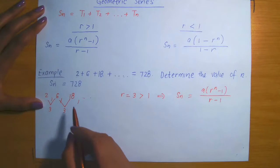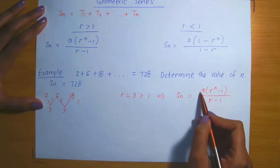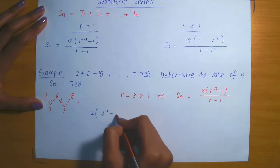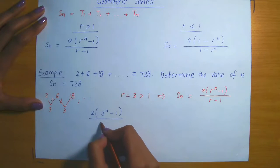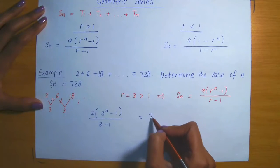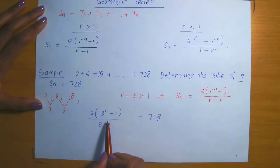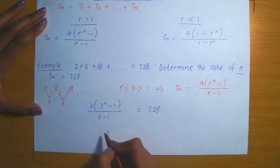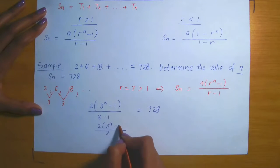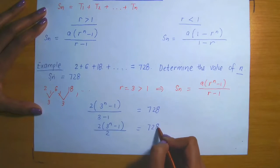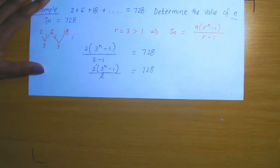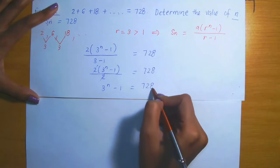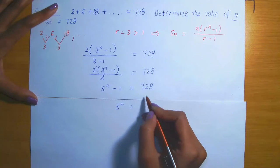Now let's solve. We have Sn equals 728, a is 2, so it's 2 times (3^n minus 1) divided by (3 minus 1) equals 728. Looking at the denominator, 3 minus 1 is 2. So we have 2 times (3^n minus 1) divided by 2 equals 728. The 2s cancel, leaving 3^n minus 1 equals 728, which means 3^n equals 729.